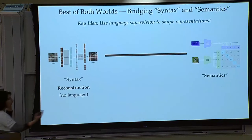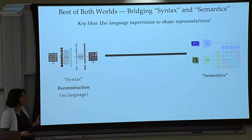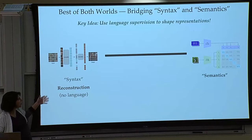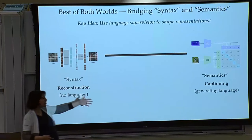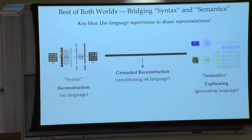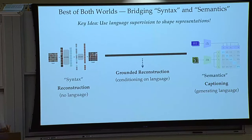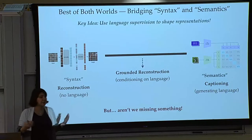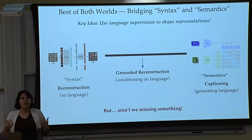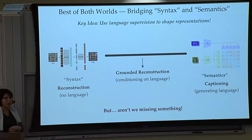We introduced a model called Voltron. What Voltron is trying to do is combine the two worlds to get both syntax and semantics. Reconstruction allows me to reconstruct the image; captioning as an objective allows me to think about semantics. So maybe to get the best of both worlds, we could do grounded reconstruction — start with reconstruction but use language as additional supervision to think about the semantics of the task. But you might ask, is that enough? Probably not — this is a first attempt.